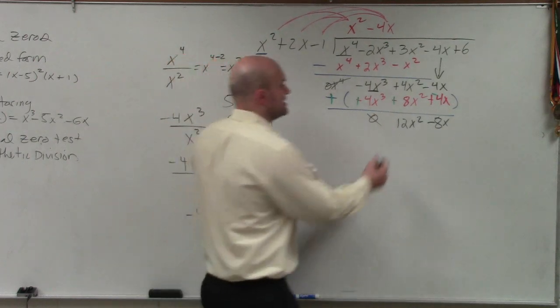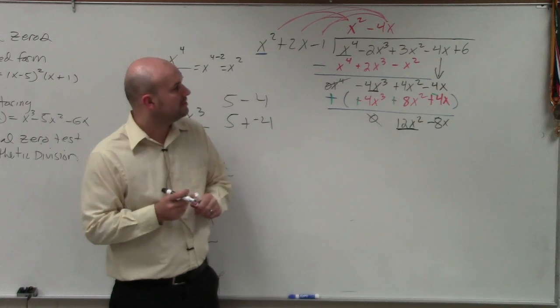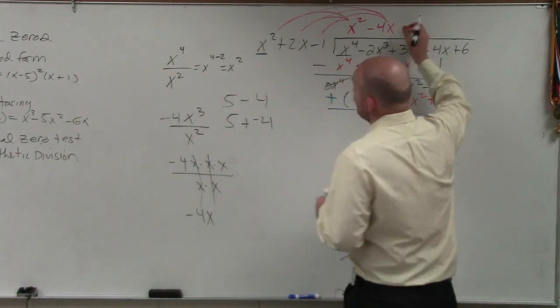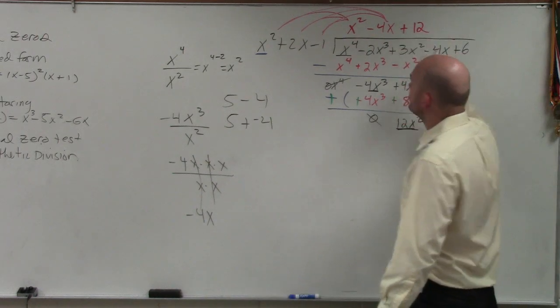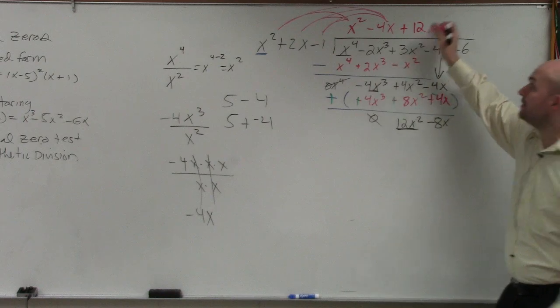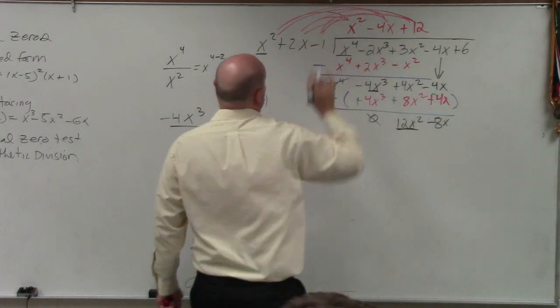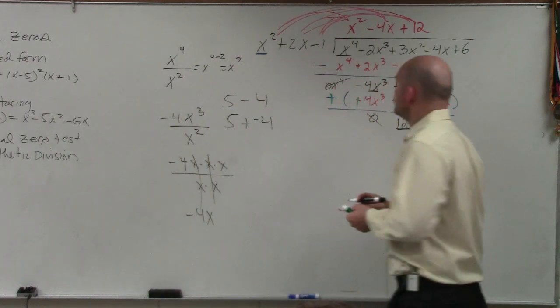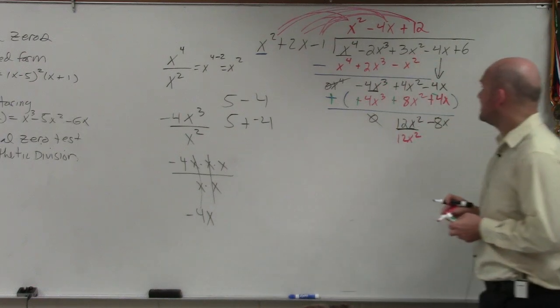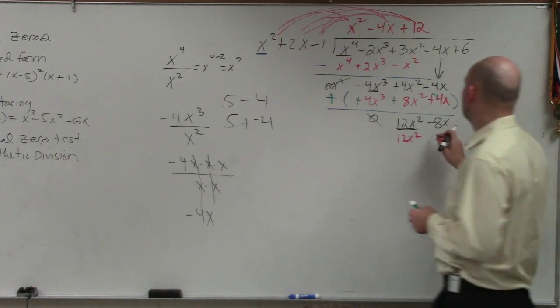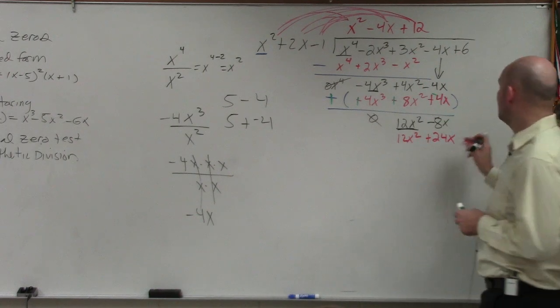Now, again, we do the same process. How many times does x squared divide into 12? 12. Well, not the x squared goes into the x squared once, but then there's that 12 there, right? So it goes in there 12 times. Now, I need to multiply the 12 times all three of the terms. So in doing that, I have 12 times x squared is 12x squared. 12 times 2x is going to be a positive 24x. And then 12 times negative 1 is a negative 12.